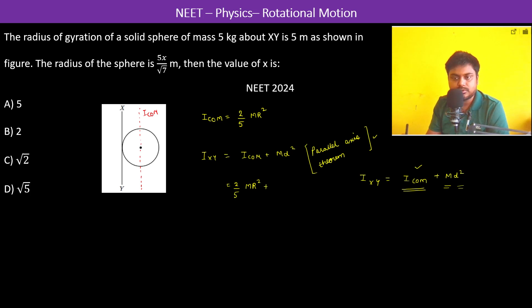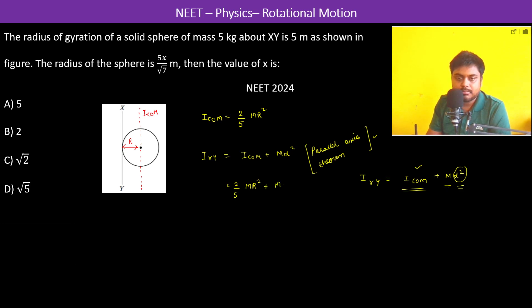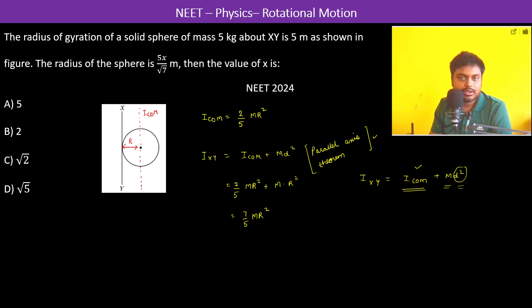Plus m times d², where this distance d between both axes is equal to r. So therefore we have plus m into r², which gives us 7/5 mr². This is I_xy.